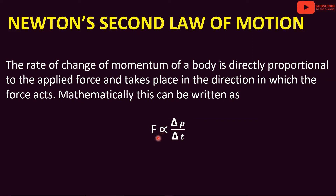Mathematically, F is proportional to delta P divided by delta T. The rate of change of momentum is delta P divided by delta T. Therefore, F is proportional to the rate of change of momentum.